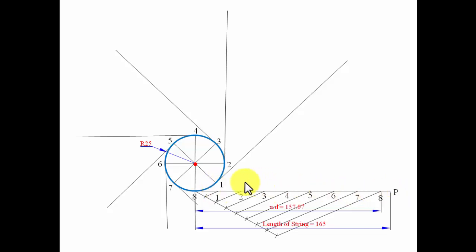With one as center and with one-P as the radius, put an arc over here. This is going to be point P1. Similarly with two-P as a radius and with two as the center, put an arc. This is going to be point P2. With three-P as the radius and with three as the center, this is P3.